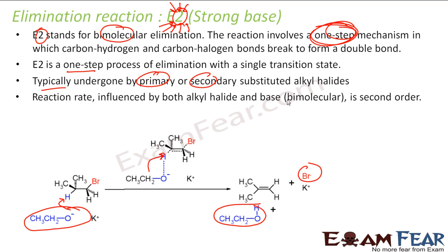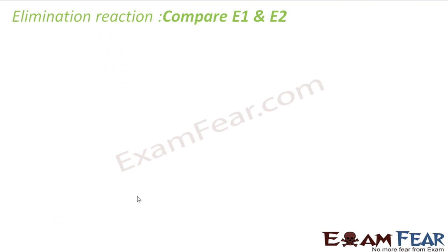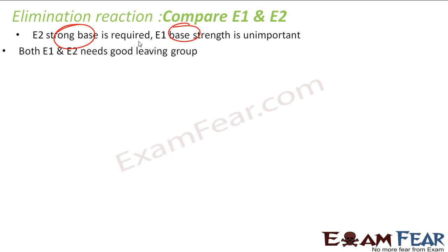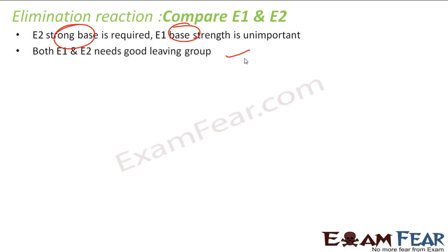The rate of E2 is influenced by both the attacking reagent and the substrate, so it is called bimolecular. It requires a strong base to pull the hydrogen. Comparing E1 and E2: E2 requires a strong base, while E1 requires only a moderate base. Both E1 and E2 need a good leaving group — that is the key similarity.